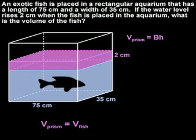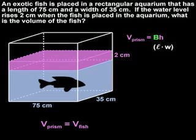Remember that the formula for the volume of a right prism is area of the base times height. Since the base of the prism shown in purple is a rectangle, the formula for the area of the base is length times width, so our volume formula can be rewritten as (length × width × height).